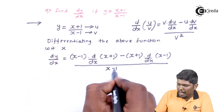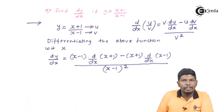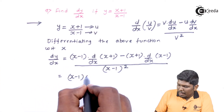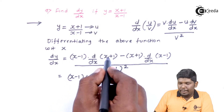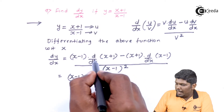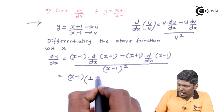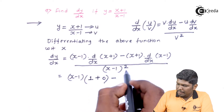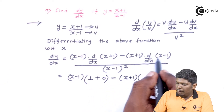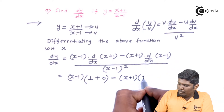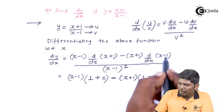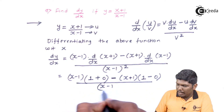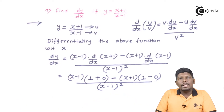The whole expression is divided by v squared, which is (x - 1) squared. Now, d/dx of (x + 1): the derivative of x gives 1, and the derivative of the constant gives 0. Similarly, d/dx of (x - 1): derivative of x gives 1, and derivative of 1 gives 0.